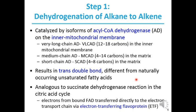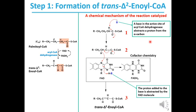The result is the formation of a trans-double bond. This is different from naturally occurring unsaturated fatty acids, which are all cis-unsaturated. This reaction is analogous to the succinate dehydrogenase reaction in the citric acid cycle. In this case, electrons from bound FAD are transferred directly to the electron transport chain via electron-transferring flavoprotein. FAD is the cofactor used by acyl-CoA dehydrogenase. Let's look at the mechanism of the reaction catalyzed by acyl-CoA dehydrogenase.